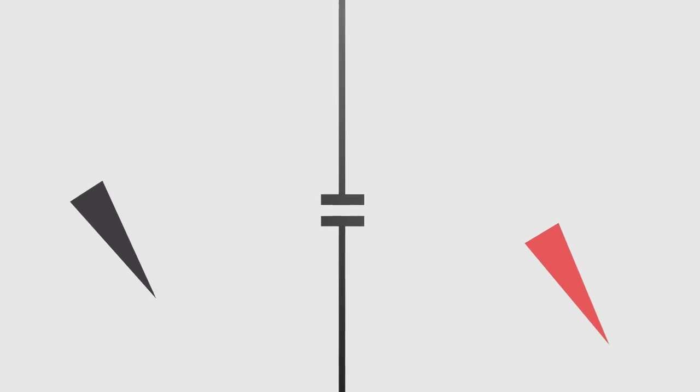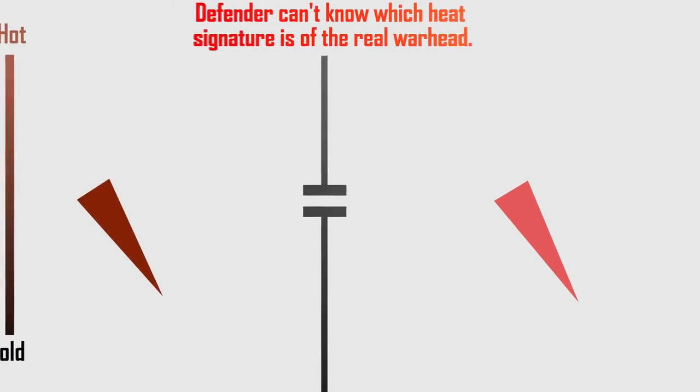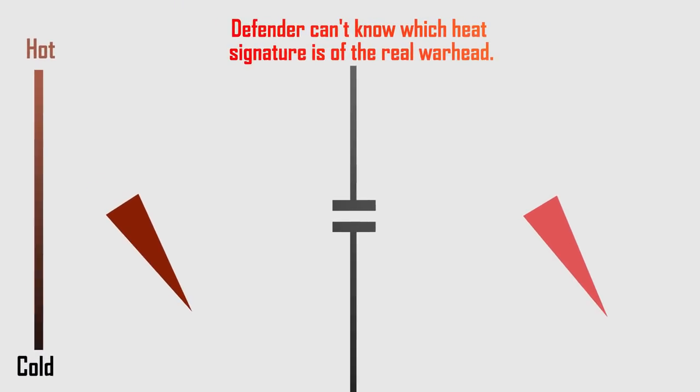Unlike the simple mylar balloons, these sophisticated decoys are relatively large, and only a few can be put on each missile. They have the same shape, size, heat, radar signature as the real warheads.